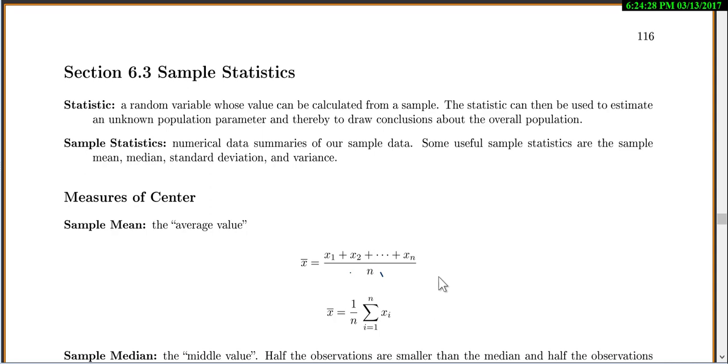Section 6.3 is about sample statistics. It's basically just how to summarize your data now with numbers. So we did graphs, now let's do numbers. A statistic is just some value we can calculate from the sample. Now our statistic is technically a random variable because we don't know what value we're going to get until we take our sample. So that's why it keeps saying a random variable.